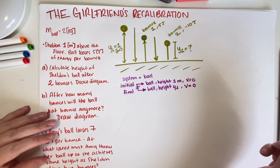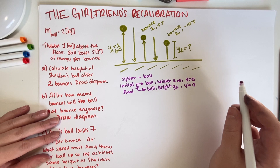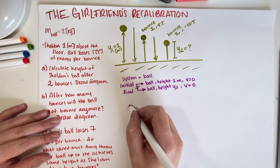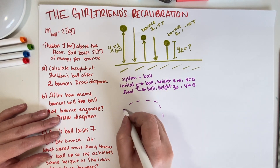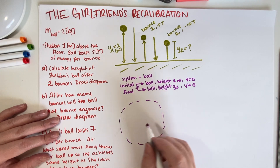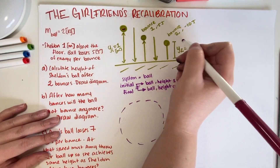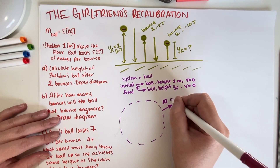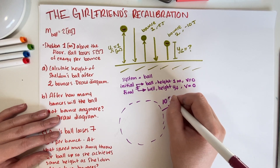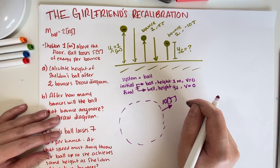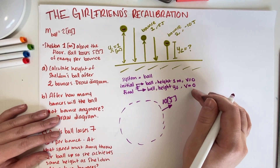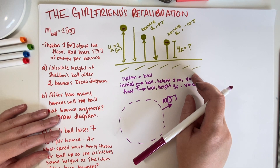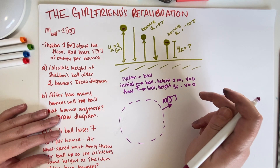Is this system open or closed? In this case, the system is open because we're losing energy to the environment. Because we're interested in the first and second bounce, 10 joules of energy went out. We don't have a change in kinetic energy because the initial and final velocities are both equal to 0, so the only energy changing here is potential energy.